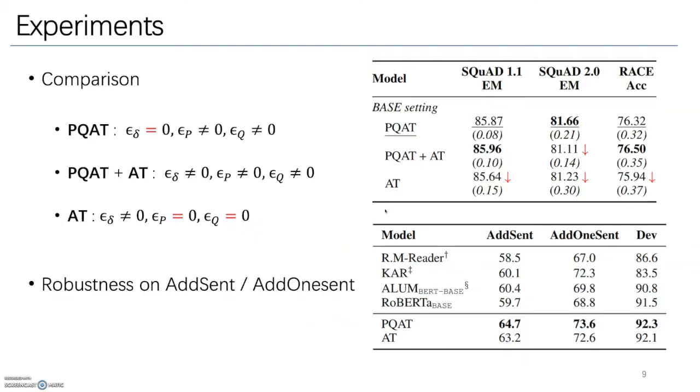Here, we compare different adversarial training methods by tuning their perturbation strength. By setting epsilon-P and epsilon-Q to zero, we recover standard AT. From the table, we can see that PQAT consistently outperforms standard AT on the three tasks.